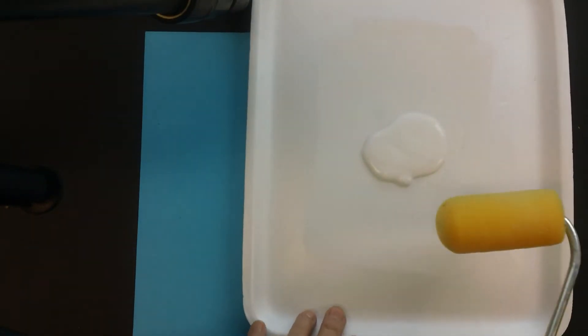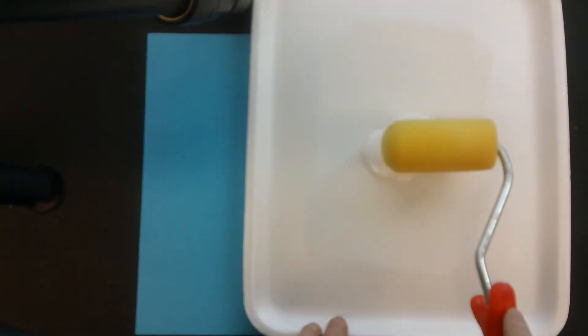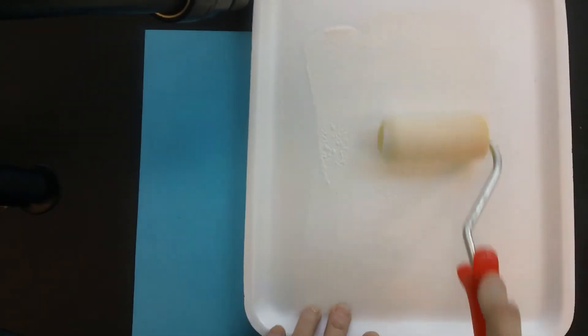There's going to be a tray with white paint and this roller. It's a foam roller. So we're going to roll the foam roller into the white paint.